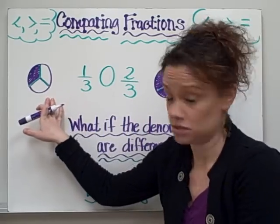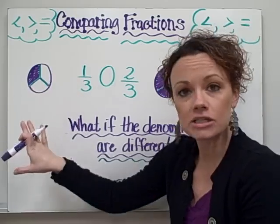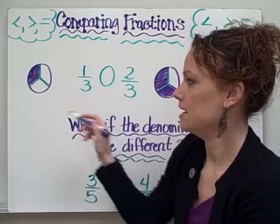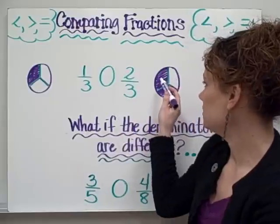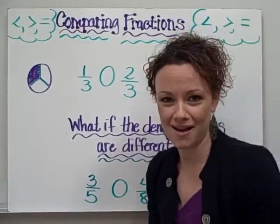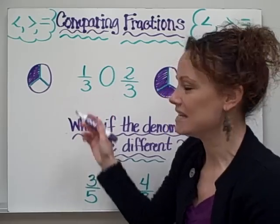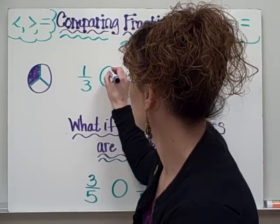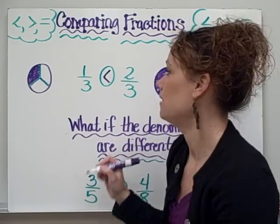Well, I've drawn picture representations for you so it's clear to see. One third looks like this, one piece out of three shaded. And two thirds looks like this, two pieces out of three pieces shaded. So it's clear to us that one third is less than or smaller than two thirds. So we're going to go ahead and put our symbol in like that.